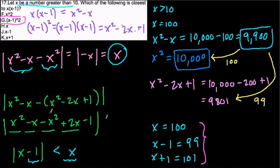So you can use the algebra to prove that the distance from the original to choice F is always x, and that distance is always greater than the distance to choice G, which is x minus 1. Hope that helped.